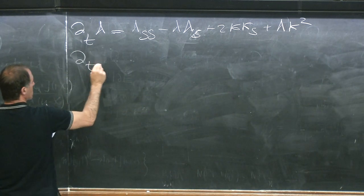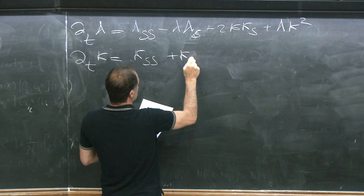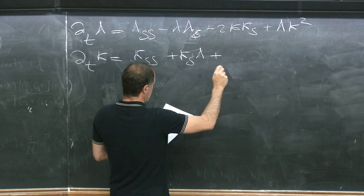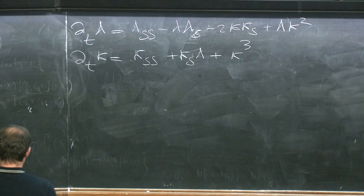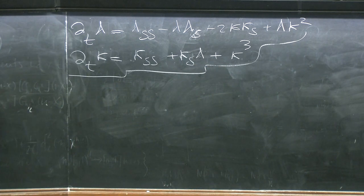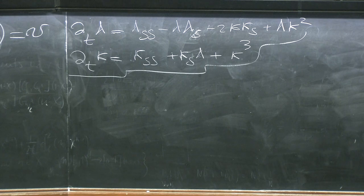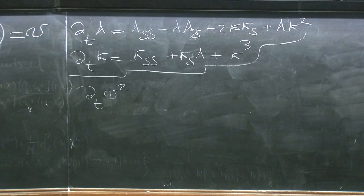Let me also recall the evolution equation for k: ∂_t k = k_{ss} + k_s λ + k^3. I want to convince you that you have a unique limit. What follows from these two equations: if you call v the velocity at every point of the motion, the square of the velocity is simply k² + λ², since the normal and tangential components are orthonormal.